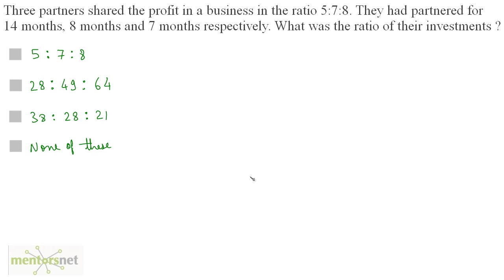Three partners shared the profit in a business in the ratio of 5 is to 7 is to 8. They had partnered for 14 months, 8 months and 7 months respectively. What was the ratio of their investments?